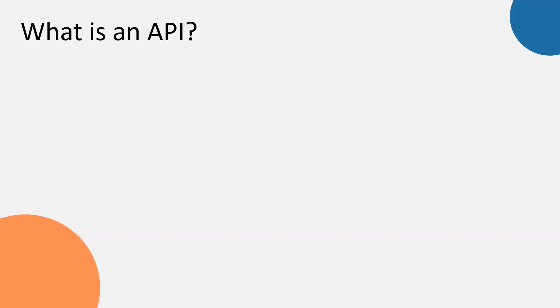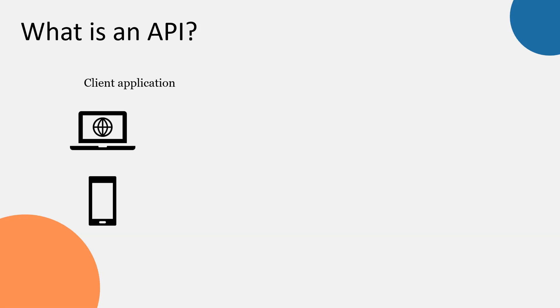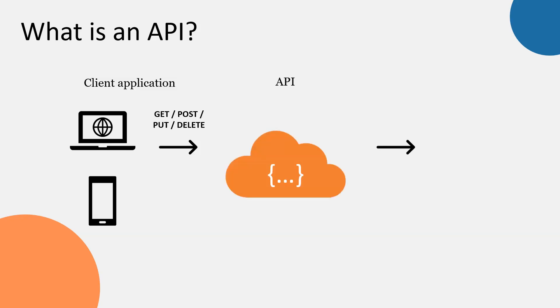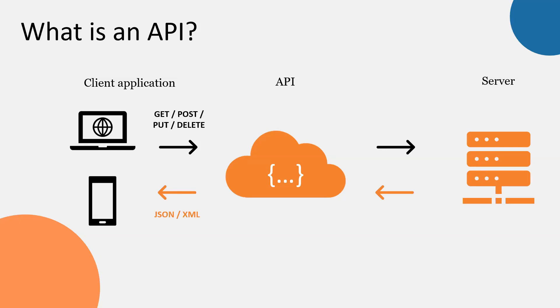So what is an API? Imagine you have a client application on your laptop or your mobile phone and you want to get some information. You're sending a request, which can be GET — you're just getting the information — or you can POST data, contributing some data to the server. You can also delete information from the server. Today we're going to look at just how to get data. You send this request, it goes via the API — that's the way to connect your application and the server — and then the API passes this request to the server. The server processes your request and sends the response back via the API into your application.